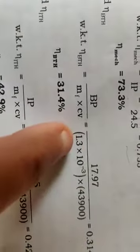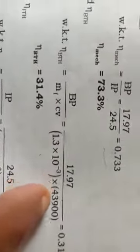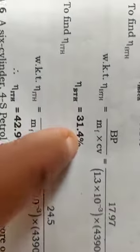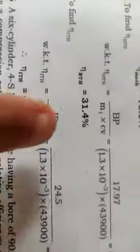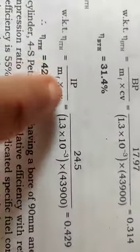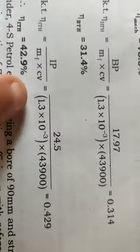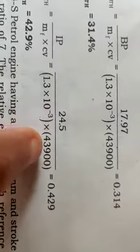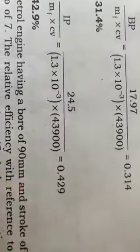To find indicated thermal efficiency: same formula, IP divided by mass of fuel times calorific value. IP is 24.5, mass of fuel kg per second is 1.3 times 10 to the minus 3 times 43,900. This is 0.429, which is 42.9%.